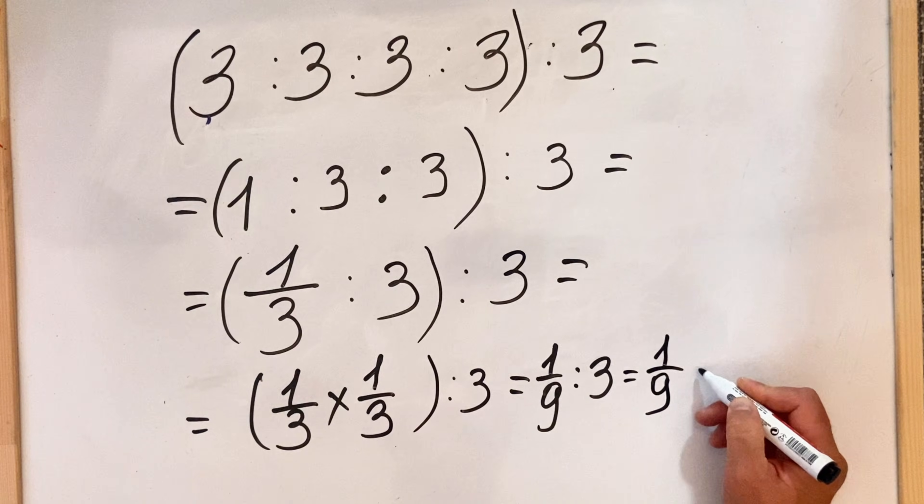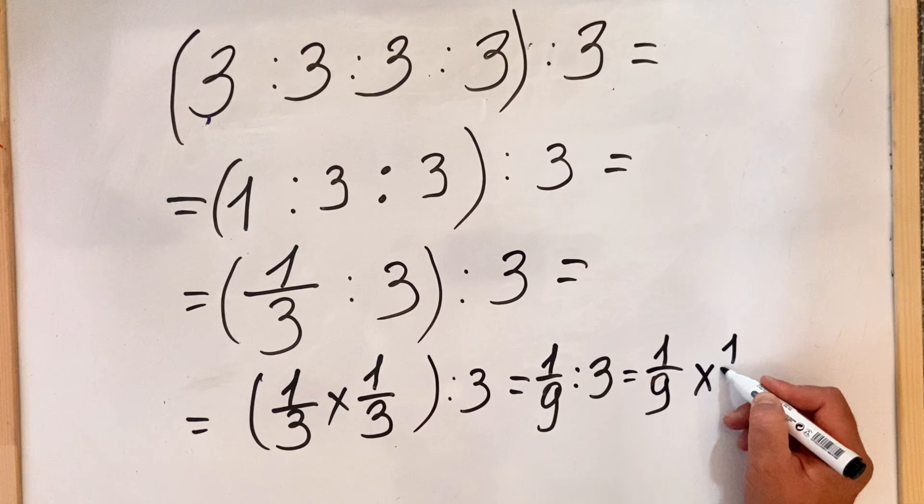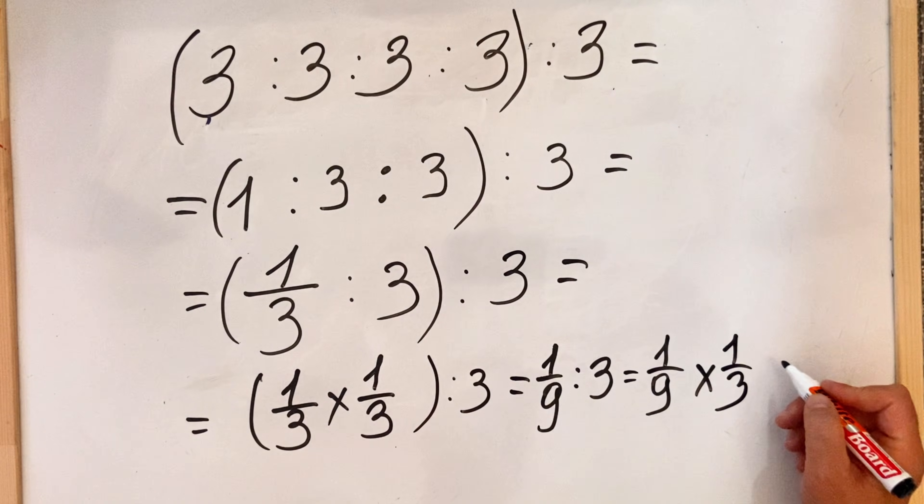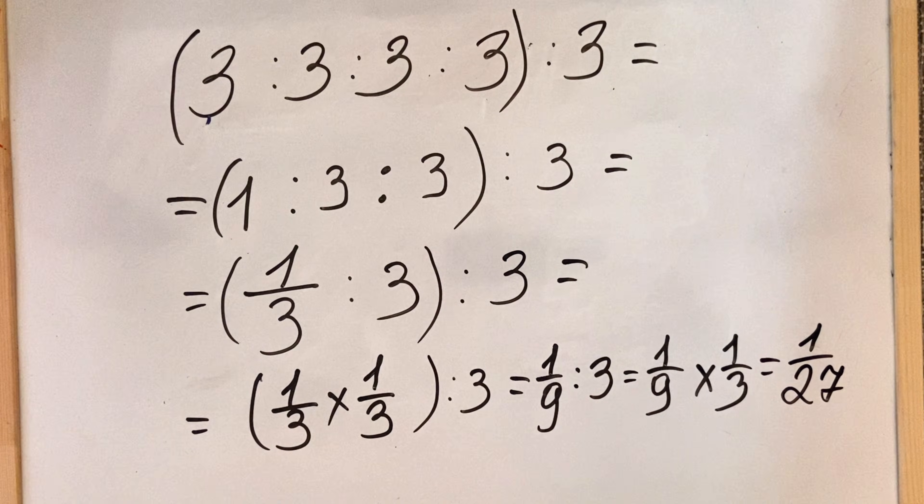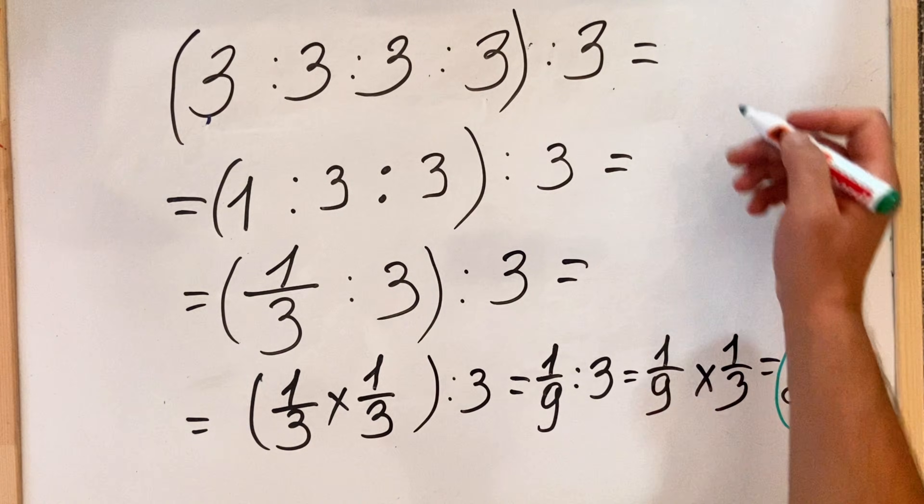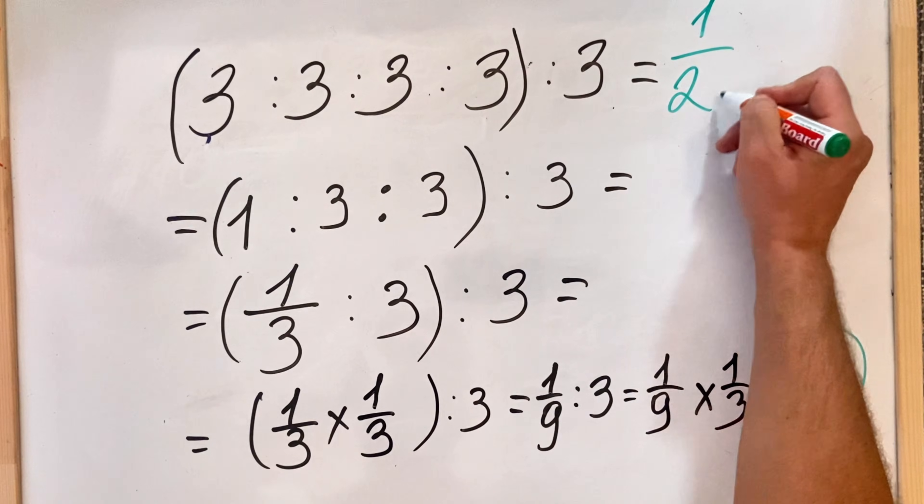So we have 1 ninth multiply by 1 third, which is 1 over 27. And of course guys, this is the correct answer: 1 over 27.